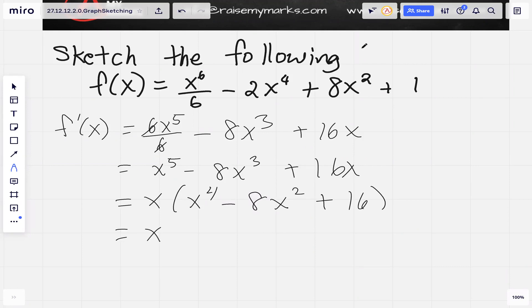So we factor, let's see if we can factor this x to the power 4 minus 8x squared plus 16. Actually it is a perfect square and each of these is also a difference of squares.